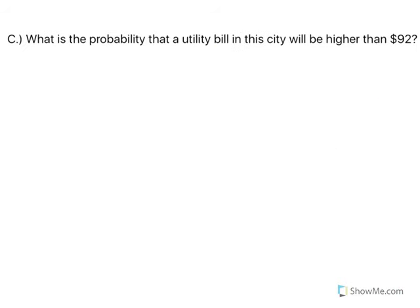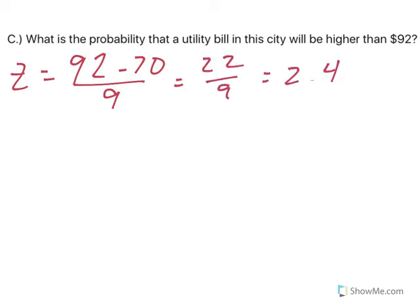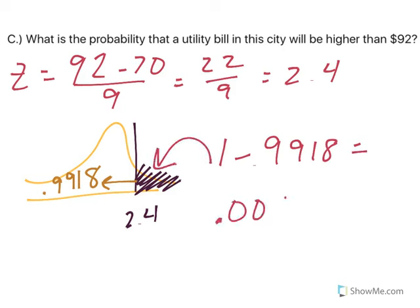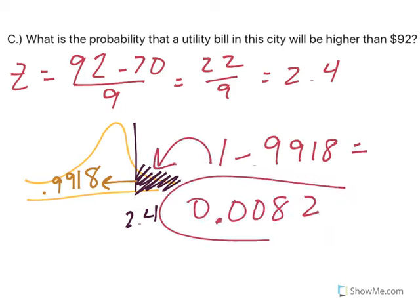What is the probability a utility bill will be higher than $92? First, find the z-score: 92 minus 70 divided by 9 gives 22 over 9, which is 2.4. On the picture, 2.4 is to the right. Higher means area to the right. Looking at 2.4 in the table gives 0.9918, but the table always gives area to the left. So I take 1 minus 0.9918, which gives 0.0082 — a very small probability.